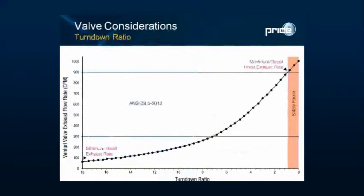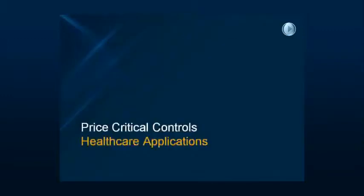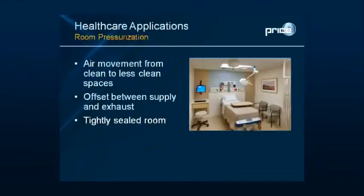Moving into healthcare applications, the primary concern is room pressurization. The goal is to have air moving from clean spaces into less clean spaces — positively pressurized rooms protect the patient, while negatively pressurized rooms protect others in the facility. Creating this differential pressure requires an offset between supply and exhaust rates, and a tightly sealed room envelope — the tighter the seal, the easier it is to achieve and maintain the desired differential pressure.